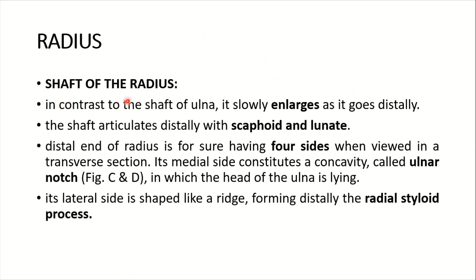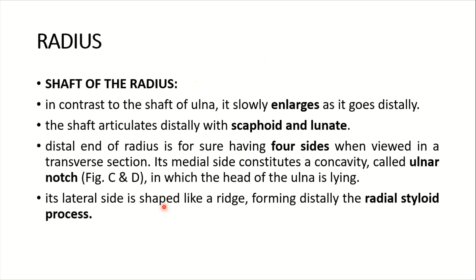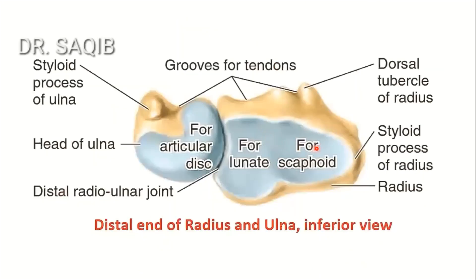The shaft of the radius, in contrast to the shaft of the ulna, slowly enlarges as it goes distally. Here you can see the thinner upper end and the broader lower end. The shaft articulates distally with the scaphoid and lunate carpal bones — laterally the scaphoid bone and medially the lunate.